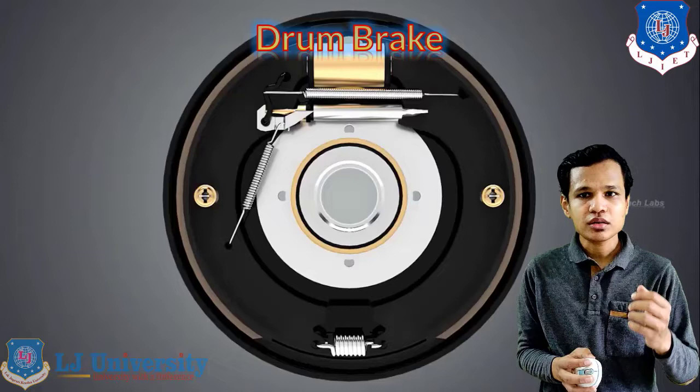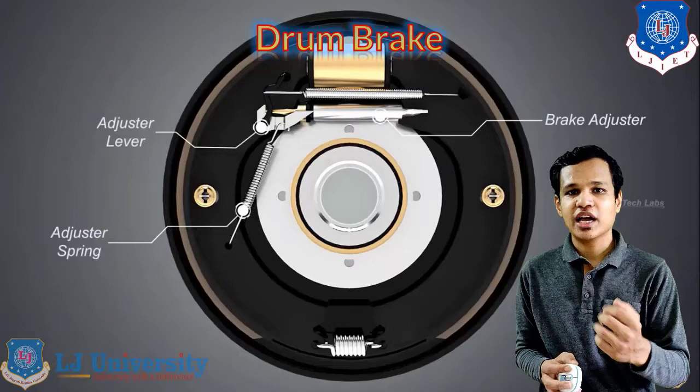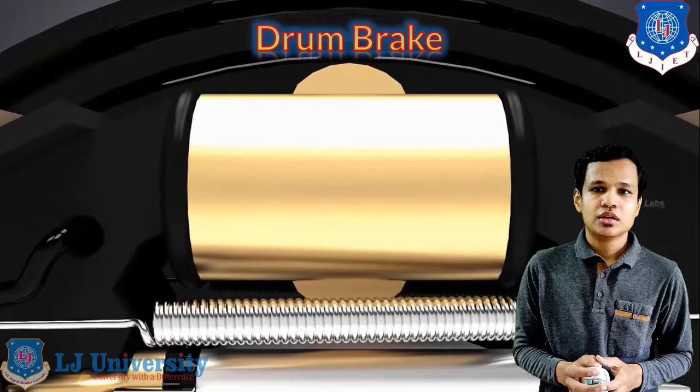The drum brake is the most simple type of brake, but it requires more frequent maintenance compared to the disc brake. The performance of the disc brake is also better, which is why we are mostly moving towards the use of the disc brake.